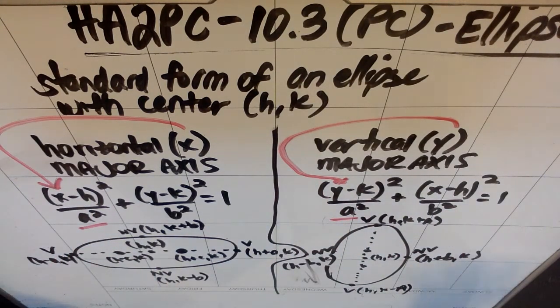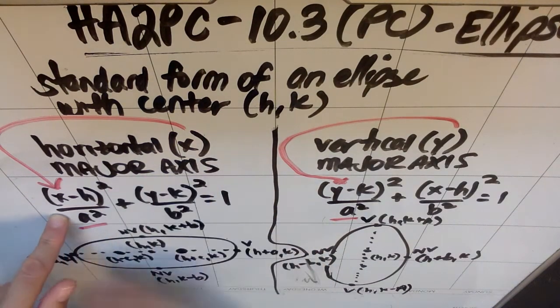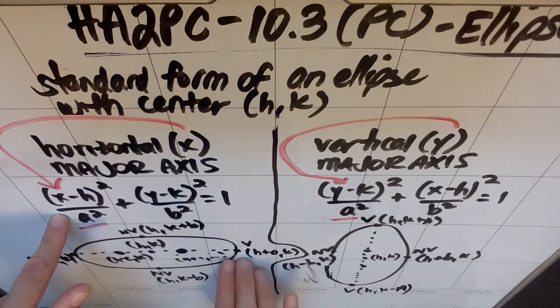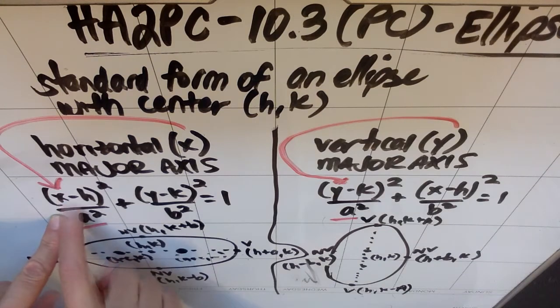So when you're writing the equation of an ellipse, it's going to be x minus h quantity squared over top of either an a or a b squared. If my major axis is horizontal, meaning in the x direction, then the x goes on top of the major axis's number which is a squared.